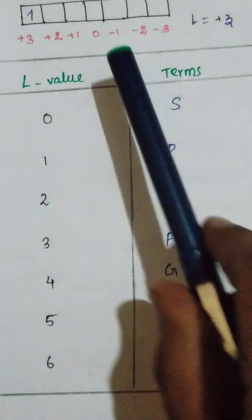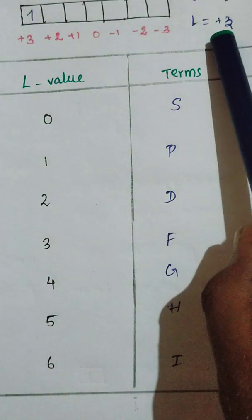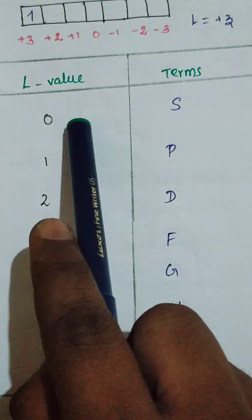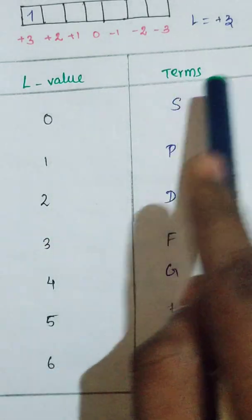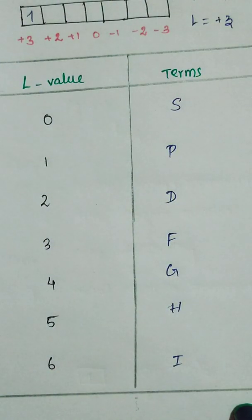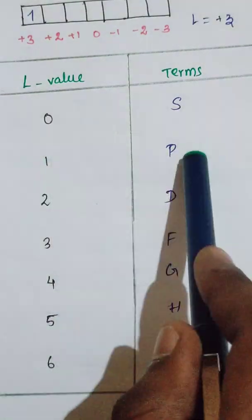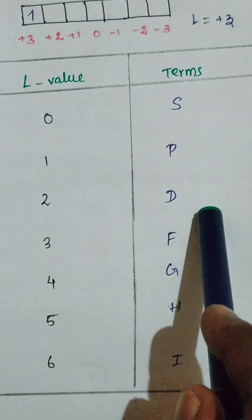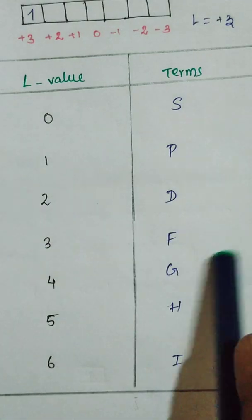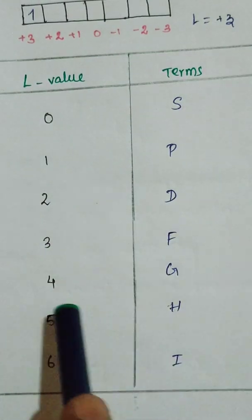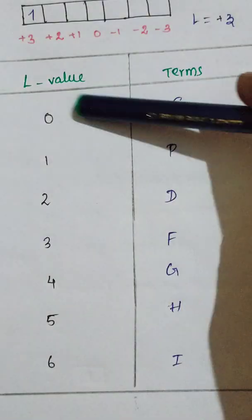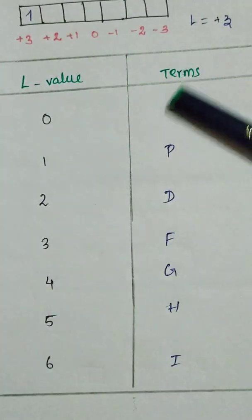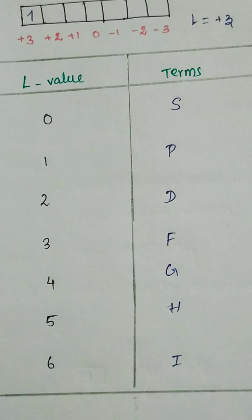To identify term symbols, the L value table is very important. Based on the L value, we assign the term letters: if L equals zero, the term is S; L equals one is P; L equals two is D; L equals three is F; L equals four is G; L equals five is H; and L equals six is I. You need to memorize these terms to work out term symbols.